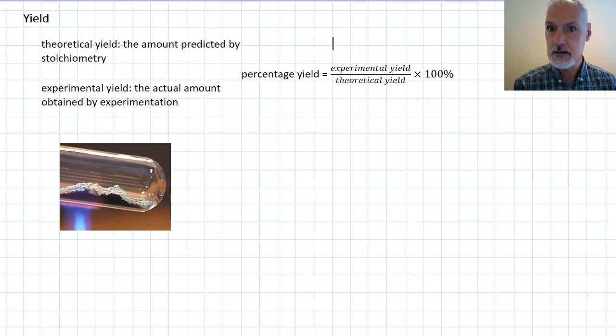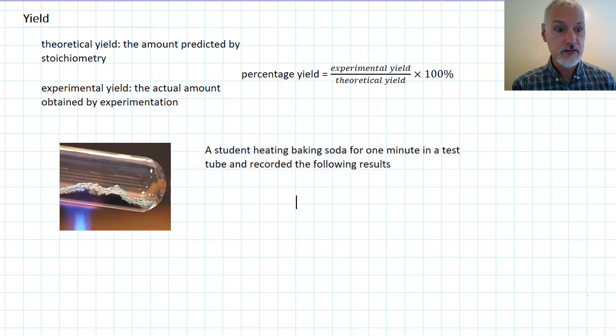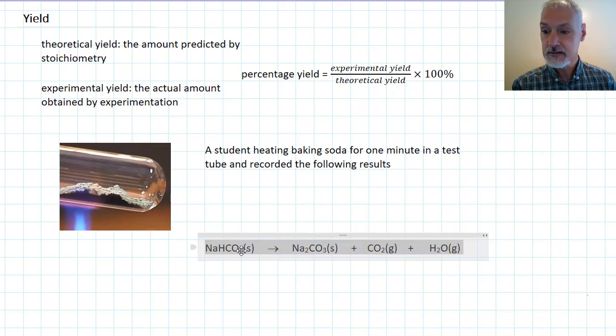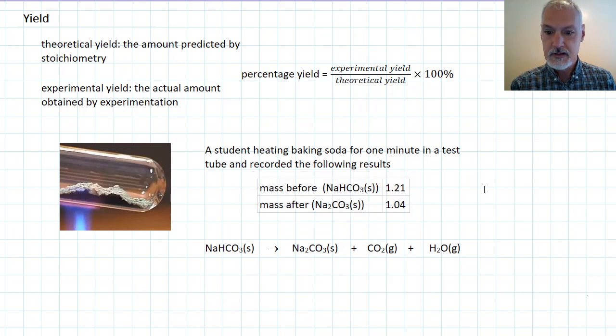To best understand these, let's take a look at an actual example. The example I'm going to consider is a student heating some baking soda in a test tube. The reaction is supposed to be as follows. Sodium bicarbonate upon heat decomposes and breaks down into sodium carbonate, carbon dioxide, and water, or steam in this case because of the higher temperature. Here's the data that they recorded. The mass of baking soda that was added was 1.21, and the mass after the experiment, which the student assumes to be the sodium carbonate, 1.04 grams.